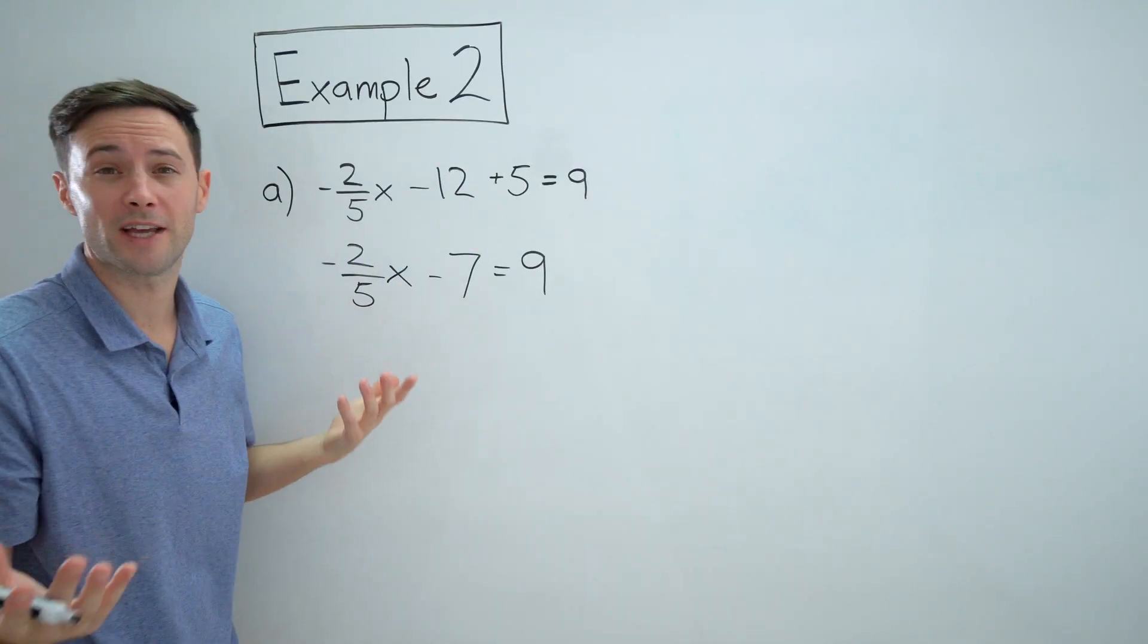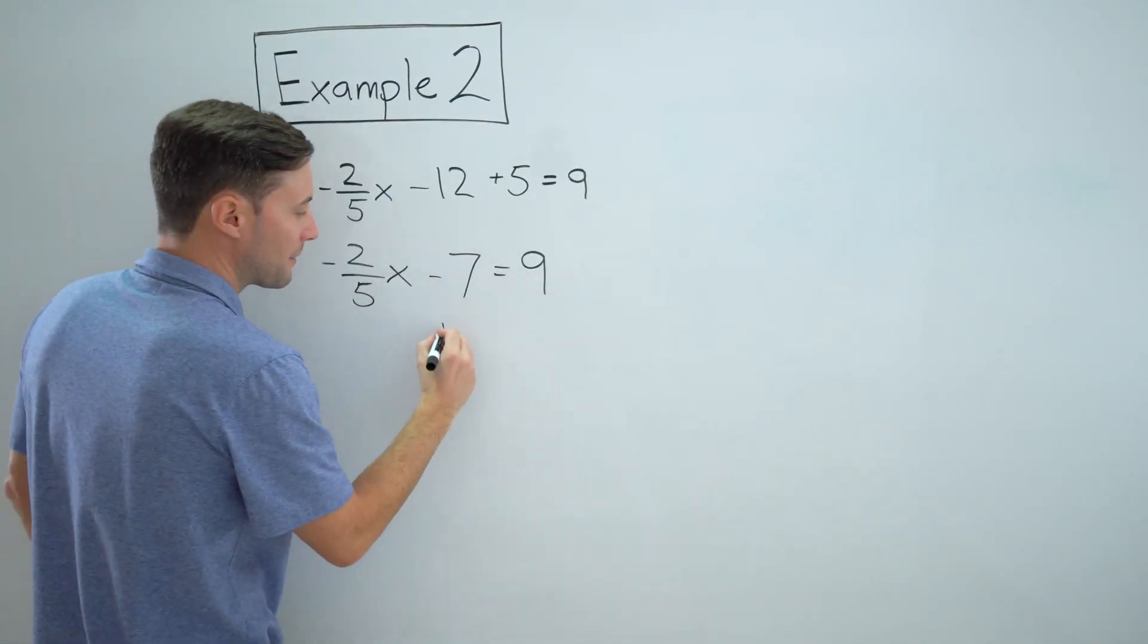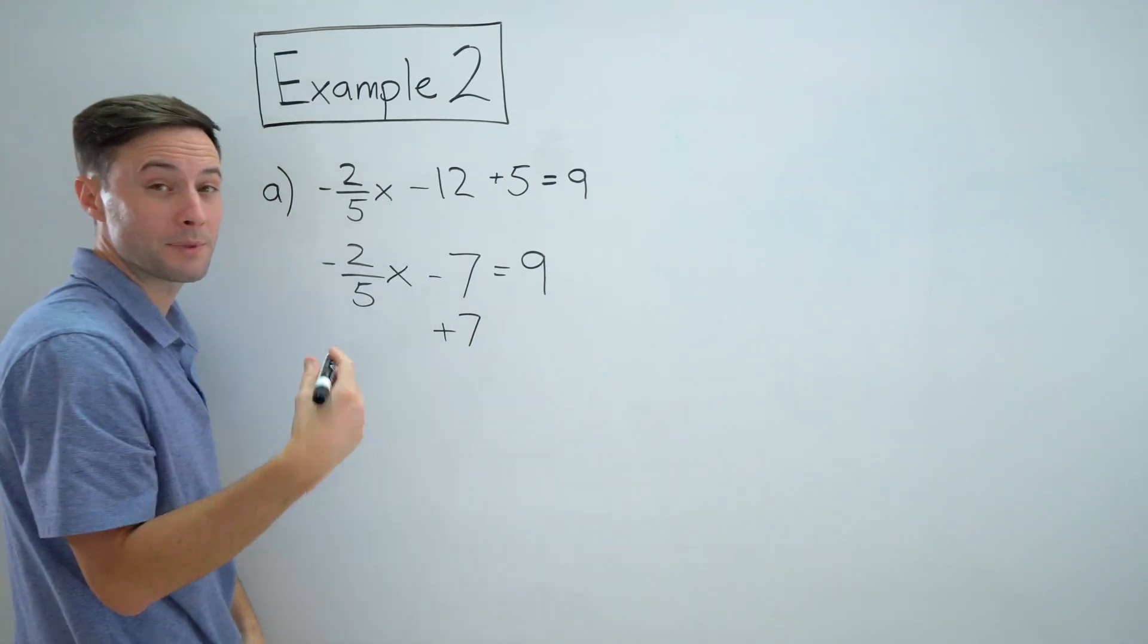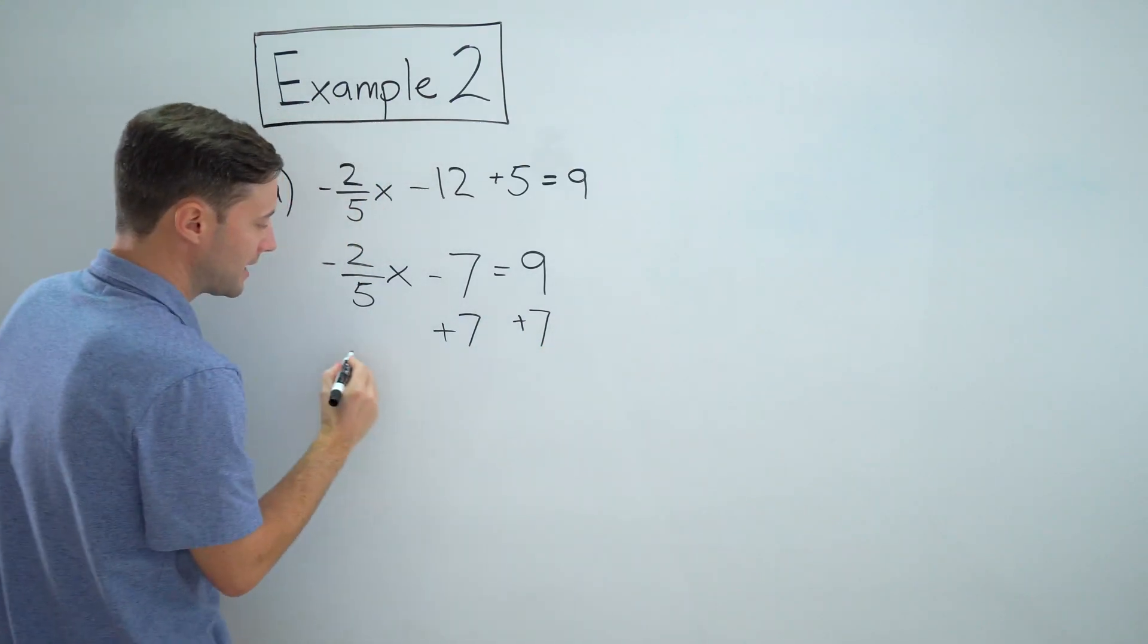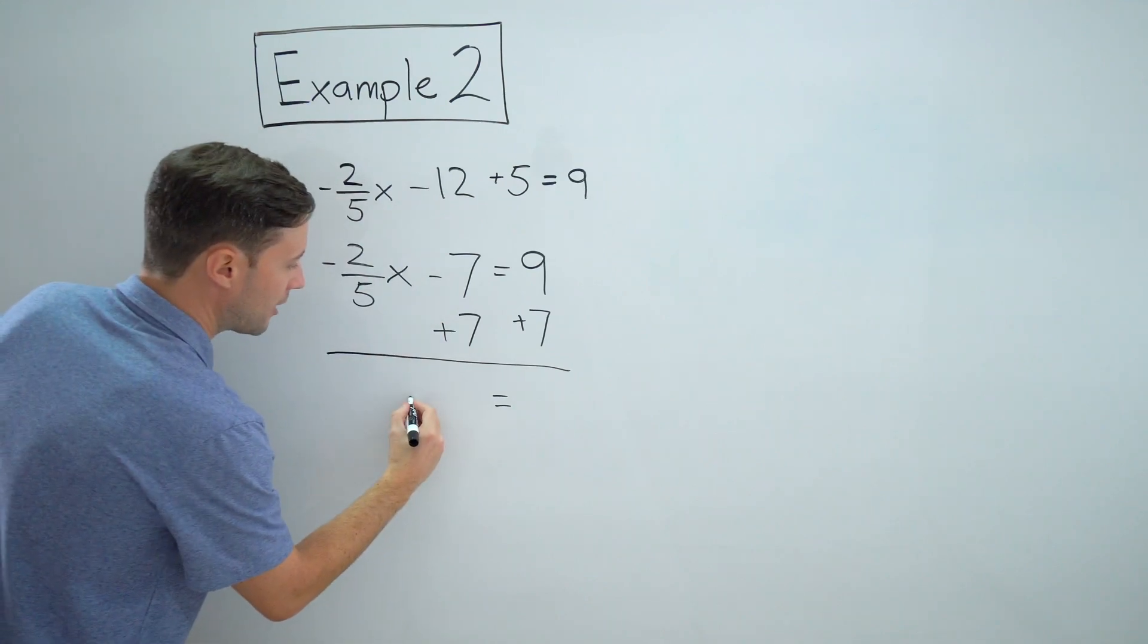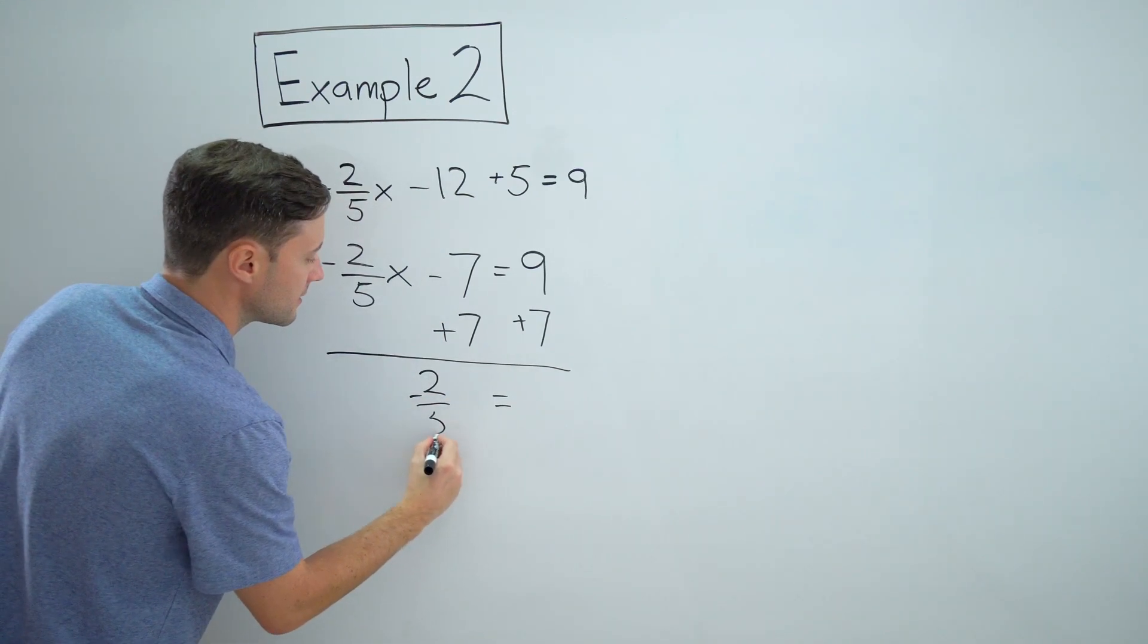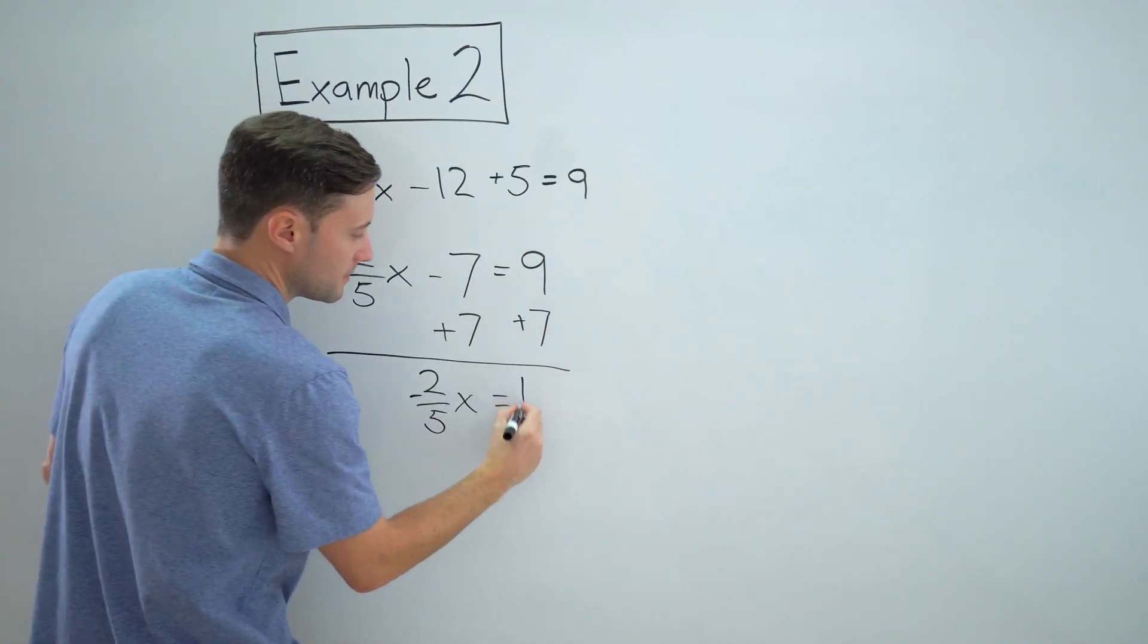So now that we've done that, now it's just like the previous example. So if I want to get rid of that minus 7, I'm going to add 7, the opposite operation, to both sides. Those go away. I've got now just negative two-fifths x equals 16.